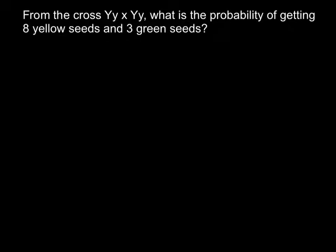Hi, today I have an easy video for you. It would be easy if you know how to apply the factorial method. Here is a problem from the cross of two heterozygous parents: what is the probability of getting 8 yellow seeds and 3 green seeds?